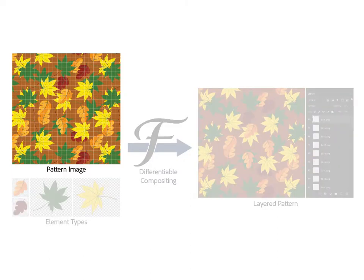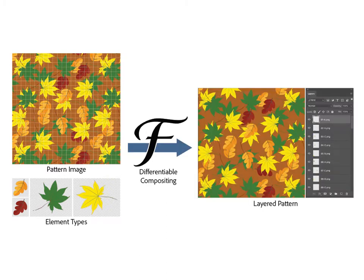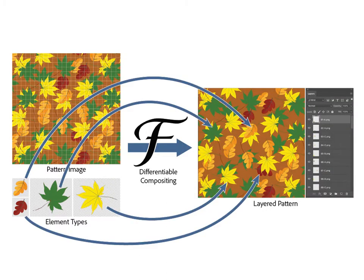Given an input image, the user crops out an image patch and mask for each type of element. We then run an optimization that solves for a set of elements with positions, orientations, and layering that reconstruct the input. Please see our paper for details.